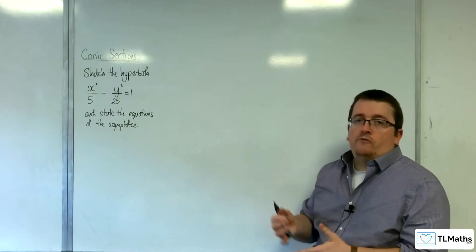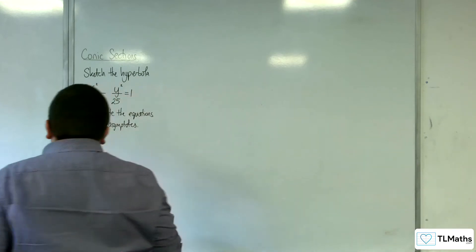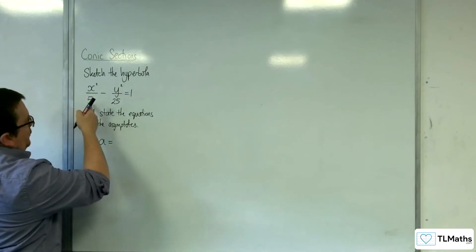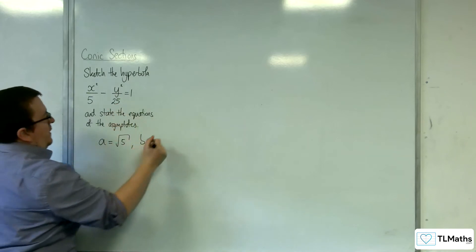So y = ±(b/a)x is in there. So a here is the square root of 5, and b is the square root of 25, which is just 5.